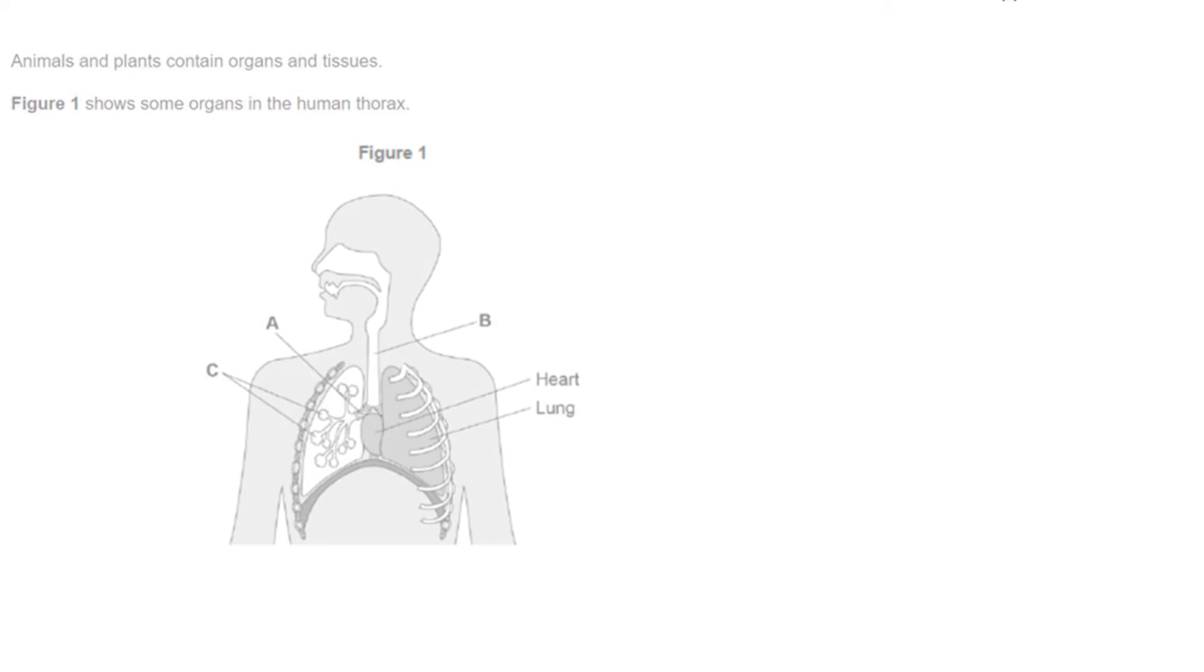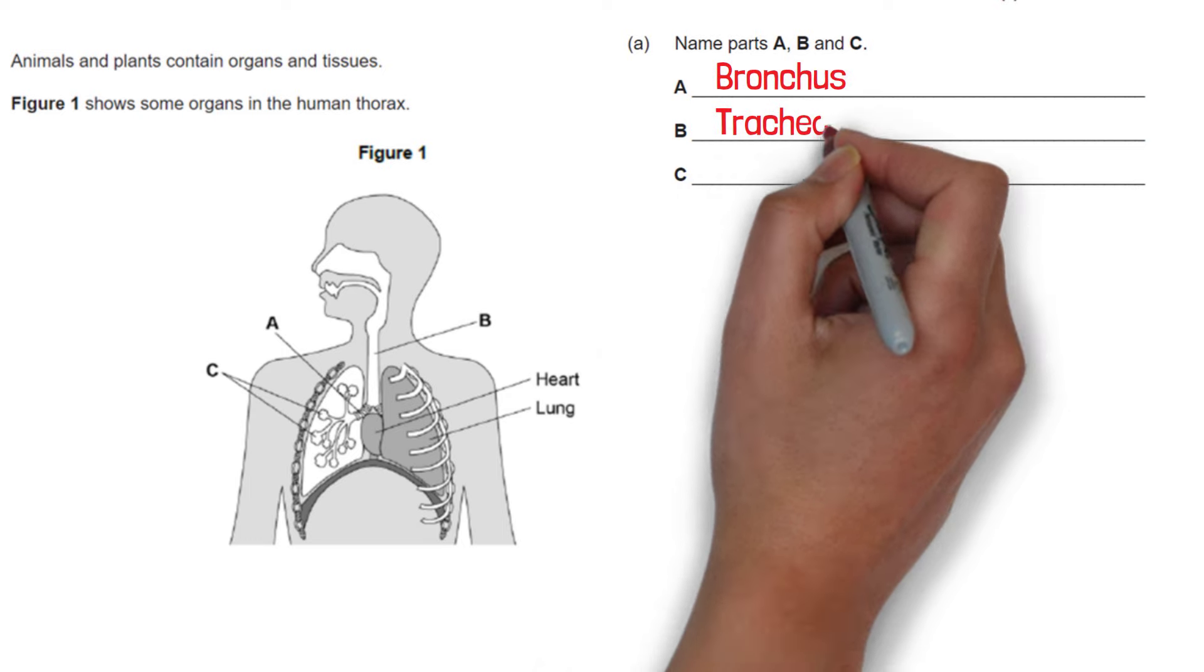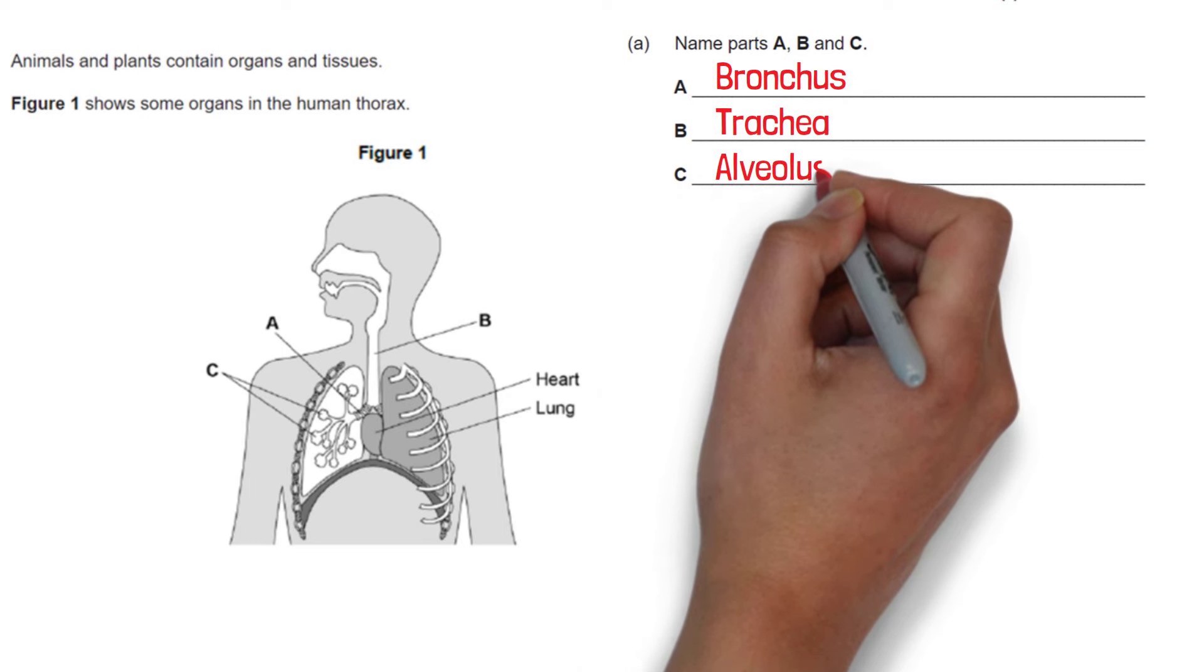The next question shows us a picture of a human showing some organs. It says name parts A, B and C. We need to know that A is the bronchus or the bronchi, B is the trachea, C is the alveolus.